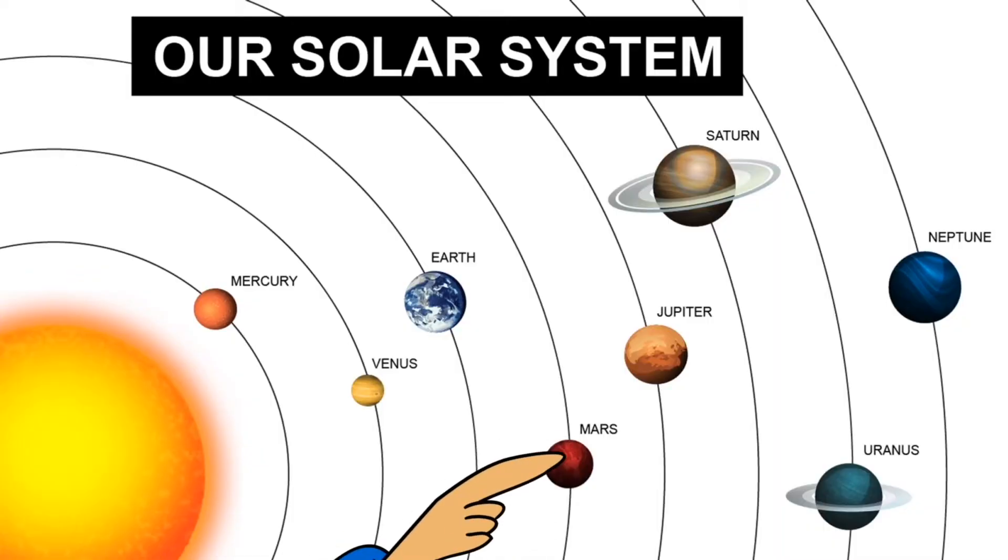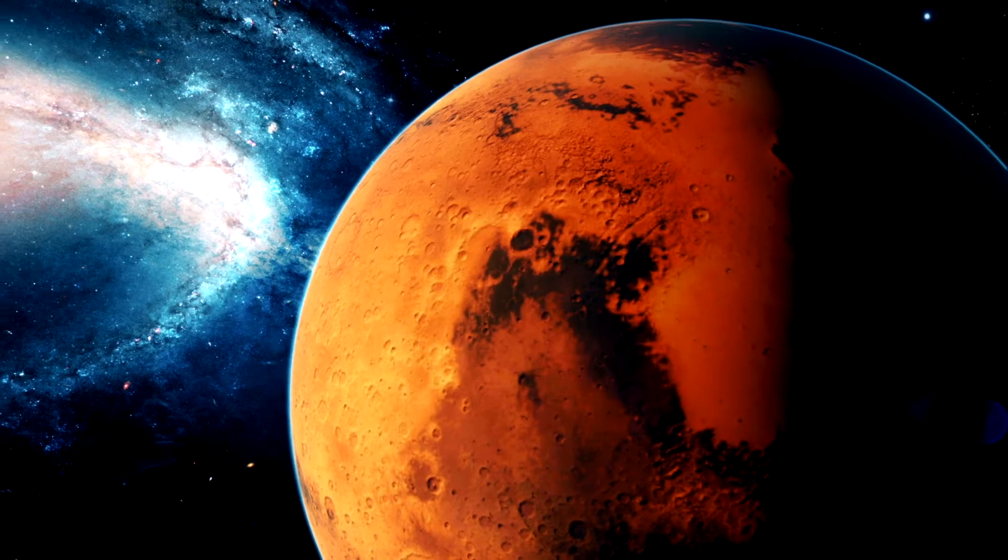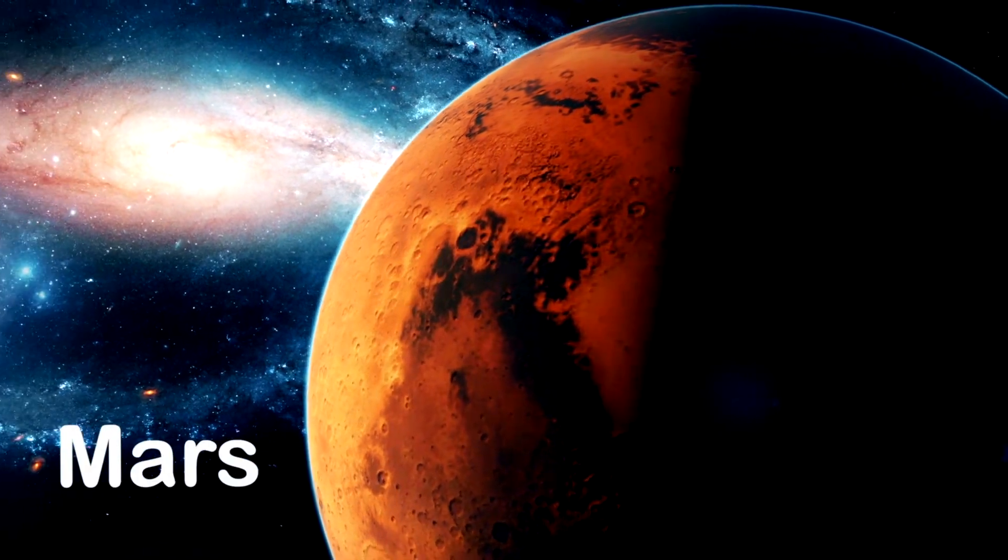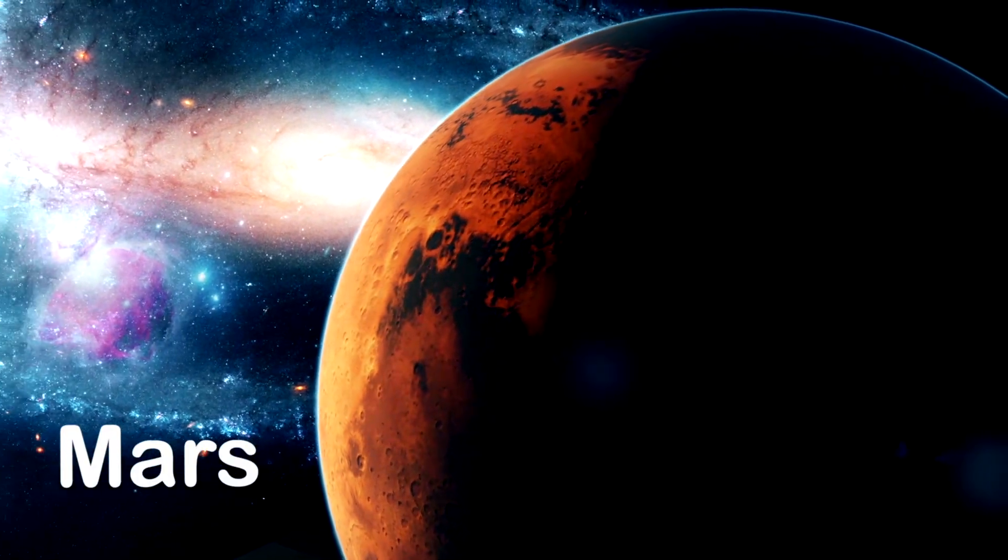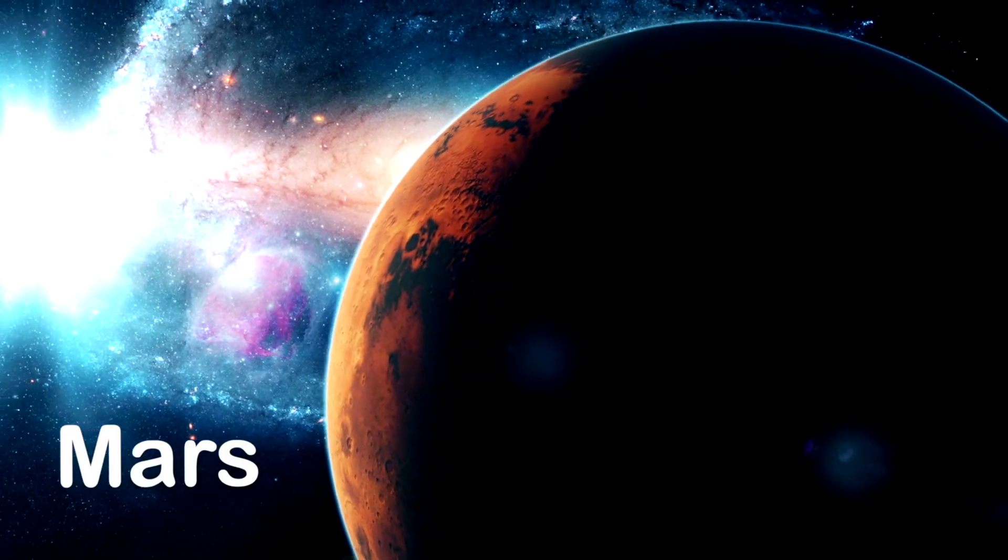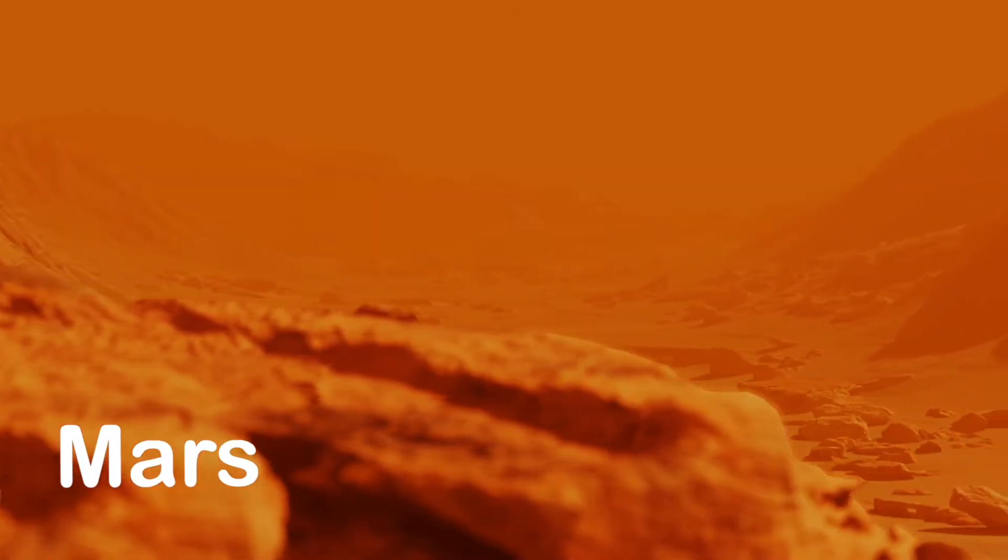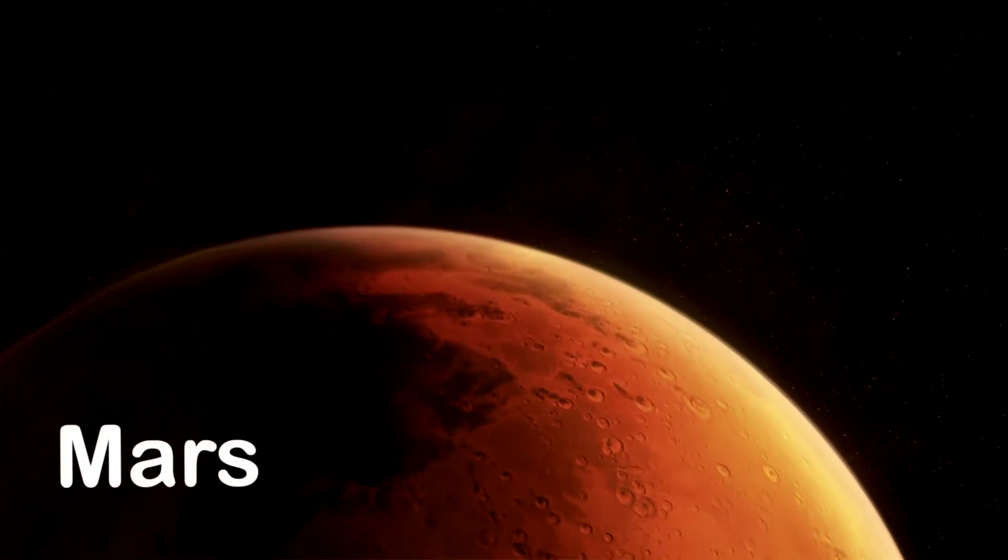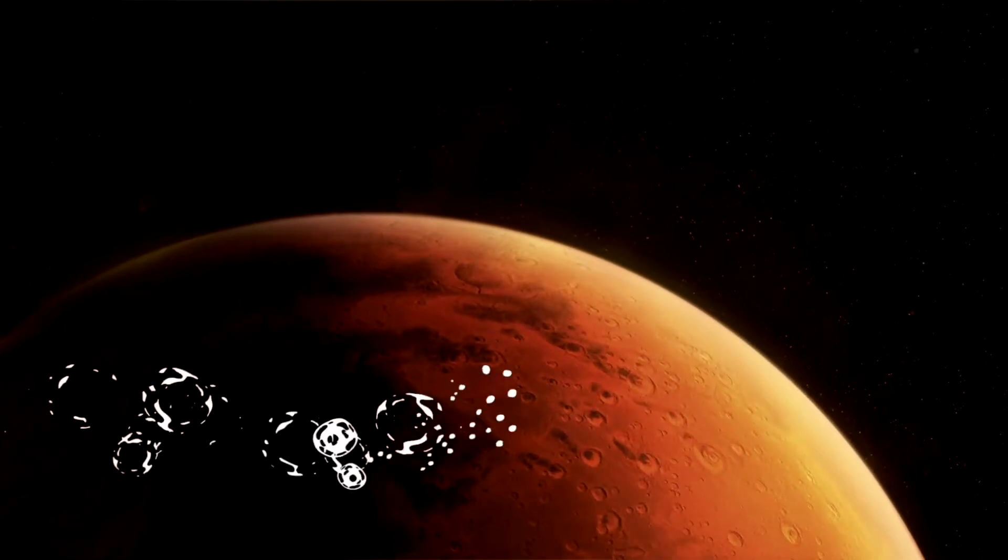The next planet in our solar system is Mars. The red planet Mars is very rocky and small. It's a cold desert world, not very warm at all. Mars has mountains, weather and ice. It would be nice to visit, but it's no paradise.